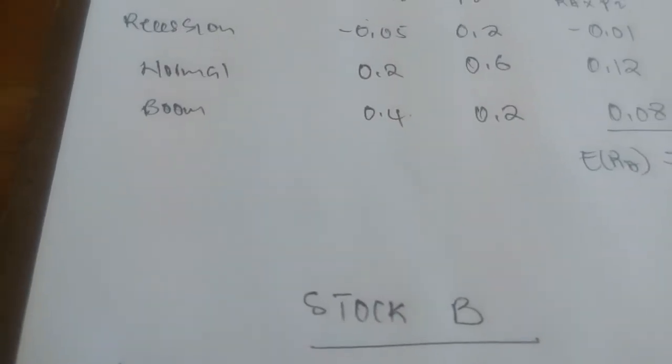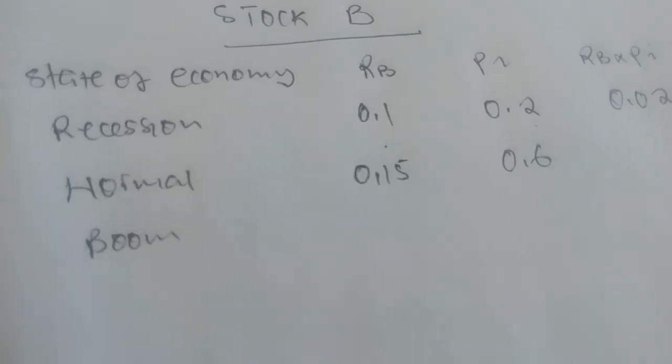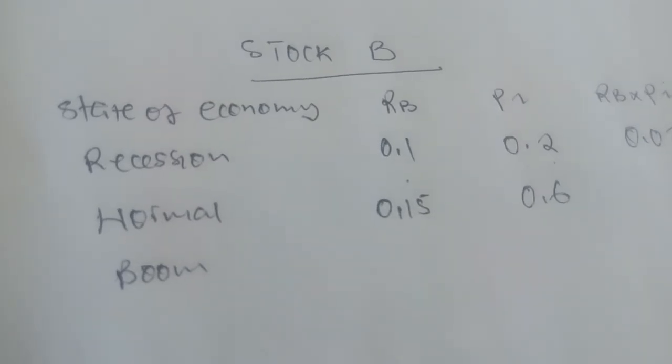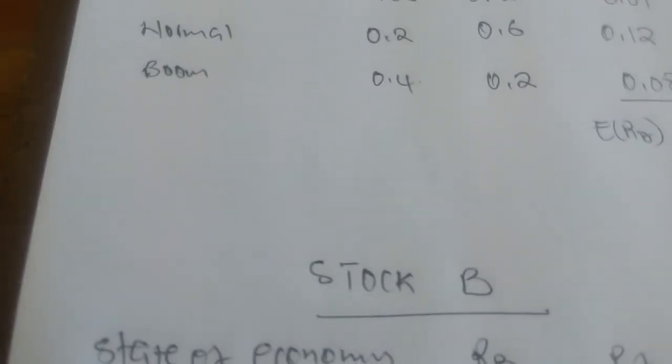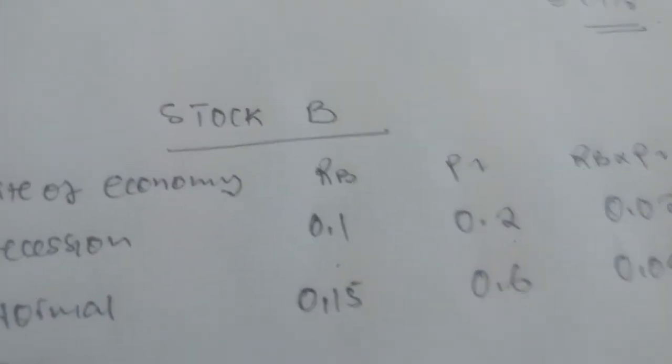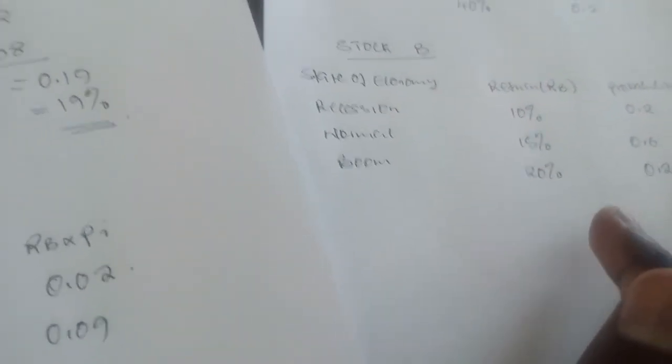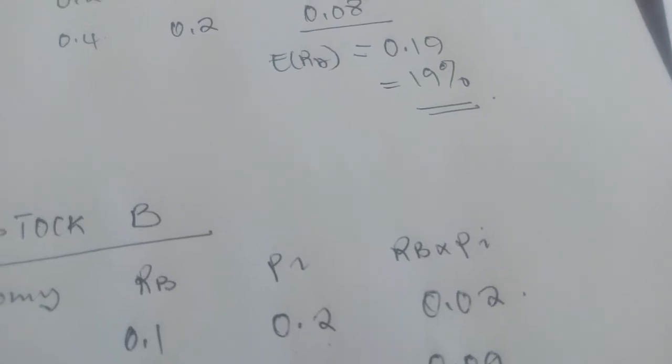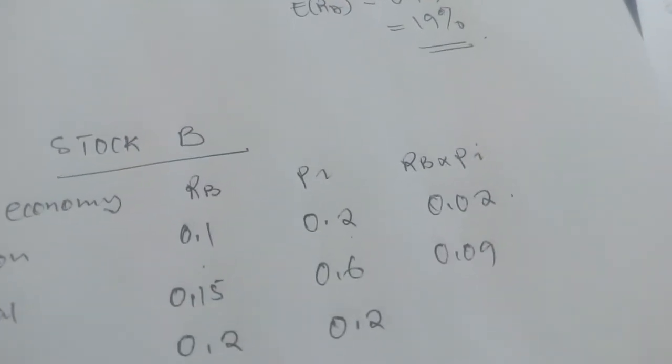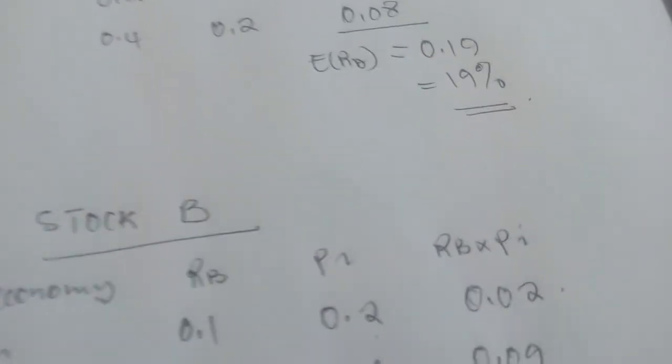We had 15% under normal, which is 0.15. Then we multiply by the probability, which was 0.6. So we have 0.6 multiplied by 0.15, we get 0.09. Then under boom, we had 20% in return and 20% probability, which gives us 0.2 multiplied by 0.2. When we multiply that, we get 0.04.